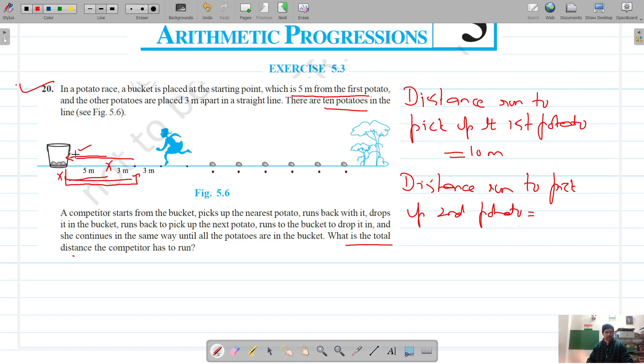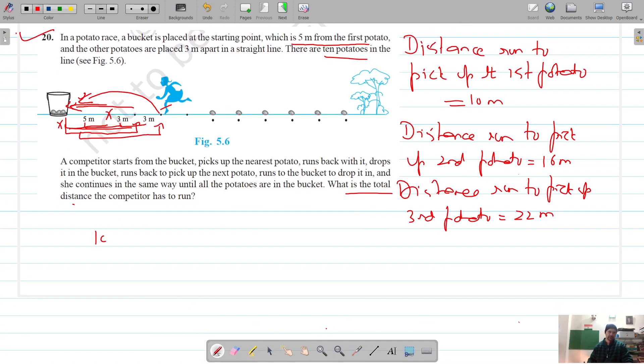The distance is 8 meters, and 8 plus 8 is 16 meters. Similarly, distance run to pick up third potato - for the third one, this is 5 plus 3 is 8, 8 plus 3 is 11. 11 for one side and 11 for the other, so 11 plus 11 is 22.